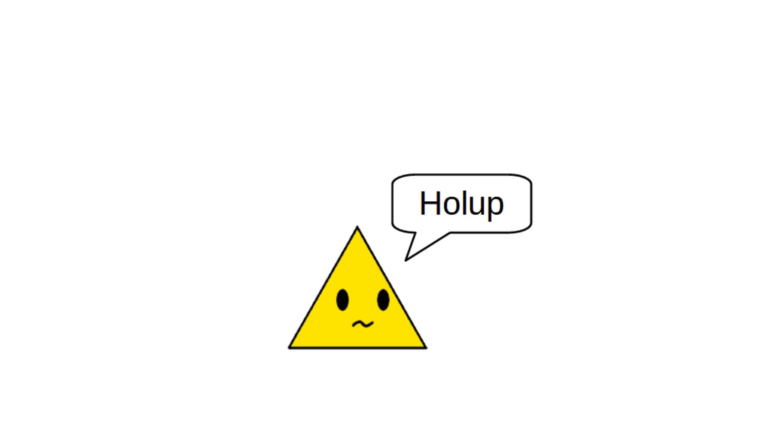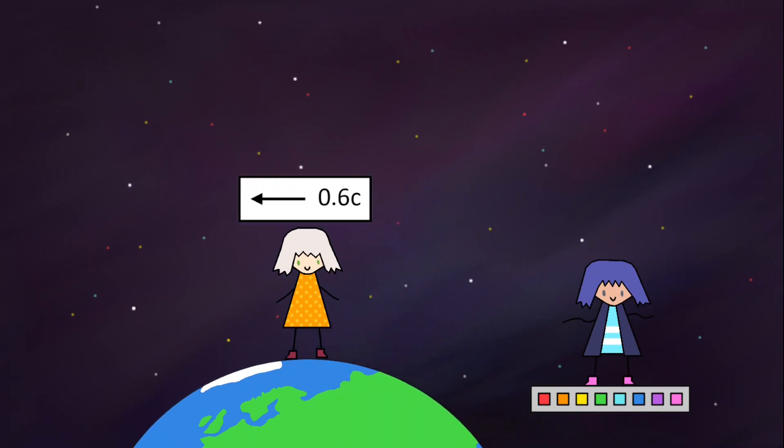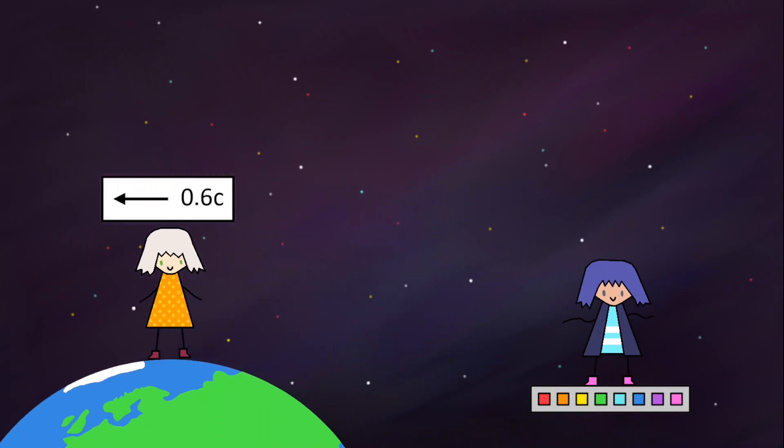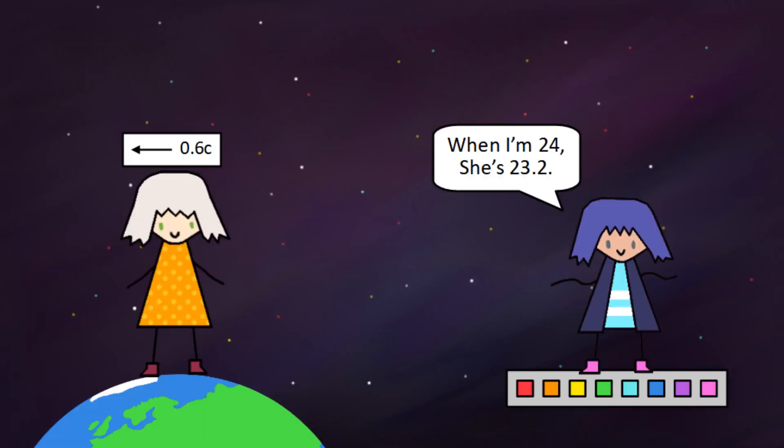But hold up a minute. From Mary's perspective, she's the one that's stationary, and Botan is the one traveling at 0.6c. If we do the same calculations again, from Mary's perspective, we'll find that when Mary ages 4 years, Botan only ages 3.2 years.